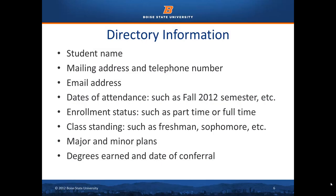Directory information as defined by FERPA and Boise State policy includes: student name, mailing address and telephone number, email address, dates of attendance such as fall 2012 semester, enrollment status such as full-time or part-time, class standing — freshman, sophomore, etc. — major and minor plans, degrees earned, and date of conferral. Again, best practice is to not release any student information externally. Defer to the registrar's office.